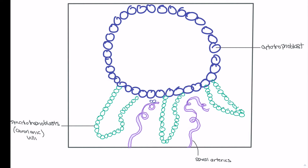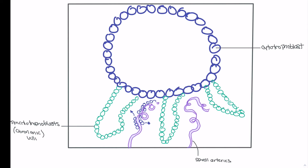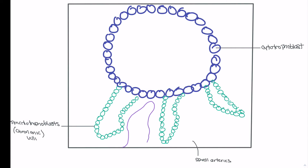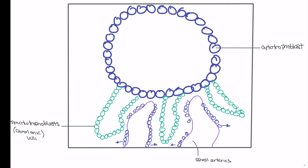As the embryo continues to develop, we see further proliferation of the cytotrophoblasts, which begin to adhere to the spiral arteries. This adherence causes the cytotrophoblasts to pull the spiral arteries apart and straighten them. As this progresses, the straightened arteries become engorged with blood, forming the maternal portion of placental circulation. The chorionic villi are brought in close proximity to these engorged arteries, anatomically preparing the placenta to perform functions such as protection and diffusion of oxygen, wastes, and nutrients.